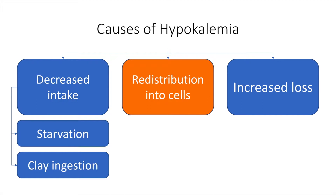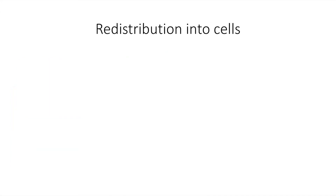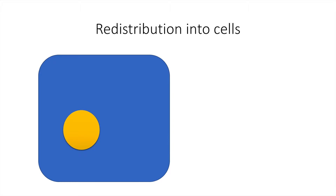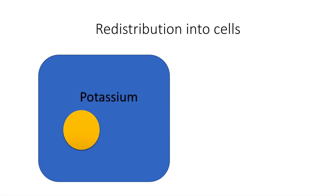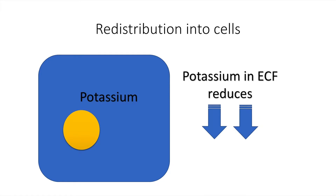Redistribution into cells is an important cause of hypokalemia. This is a schematic diagram of a cell, and this is potassium entering it. Once potassium is inside the cell, there is a reduced level of potassium in the extracellular fluid, and this results in hypokalemia.